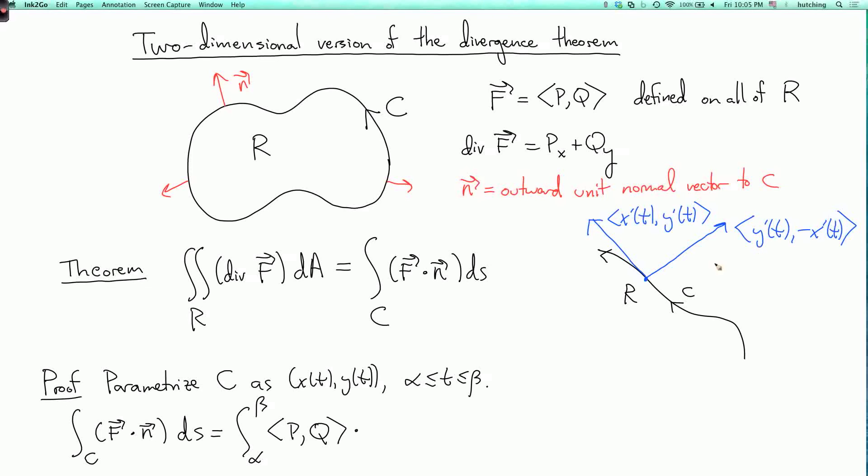This vector is not a unit vector, so I have to divide by its length to get N. So N will be the vector y prime comma minus x prime divided by the square root of x prime squared plus y prime squared. Okay? So when I take this dot product, I have y prime of t comma minus x prime of t divided by the square root of x prime of t squared plus y prime of t squared dt.